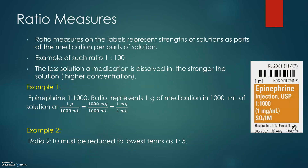The last measurement type is ratio. Similarly to percentages, ratios represent dosage strength but are not always out of 100. Ratio measures on labels represent the dosage strength as parts of medication per parts of solution — for example, 1 to 100, 1 to 1000, or 1 to 10. The less solution a medication is dissolved in, the stronger the solution, meaning higher concentration.